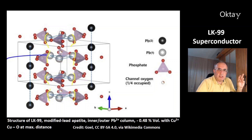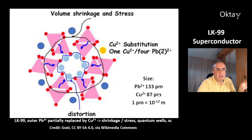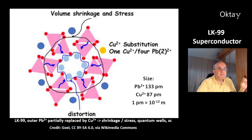According to another theoretical work, the copper ions cause stress. That's why the oxide ions prefer the maximum distance from the copper ions. The outer lead ions are replaced partially by the copper ions — the copper ion is much smaller than the lead ion. This causes a shrinkage and stress, which produces quantum wells, and this gives LK-99 superconductivity according to Lee and Kim.